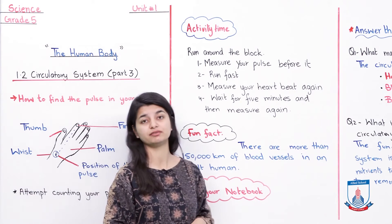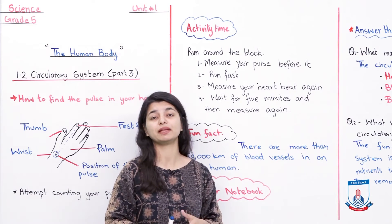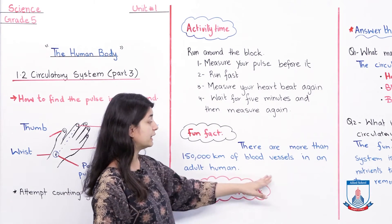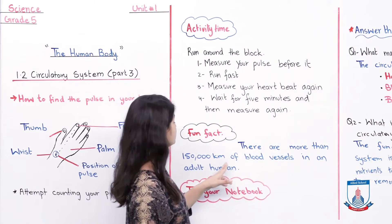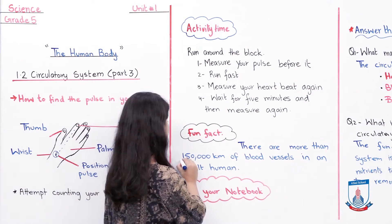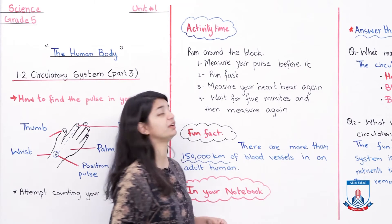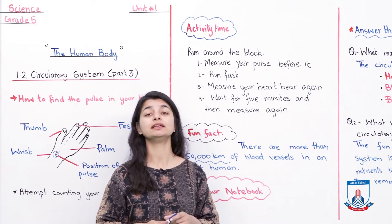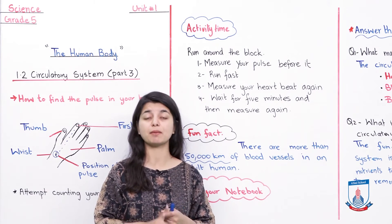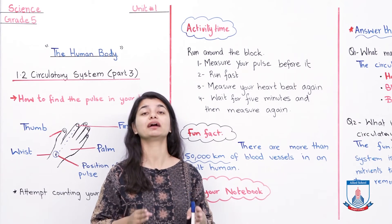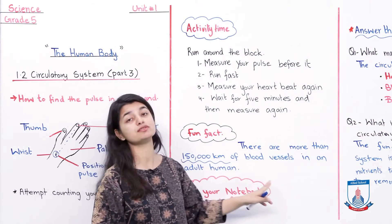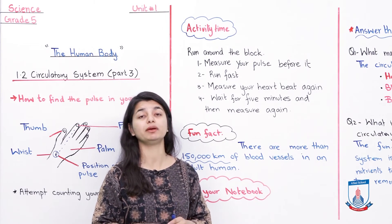Next, we have a little fun fact — so that it will be interesting for you to learn something new. There are more than 150,000 km of blood vessels in an adult human. That is a huge number. The blood vessels in your body — capillaries, veins, arteries — they extend about 150,000 km in your body.